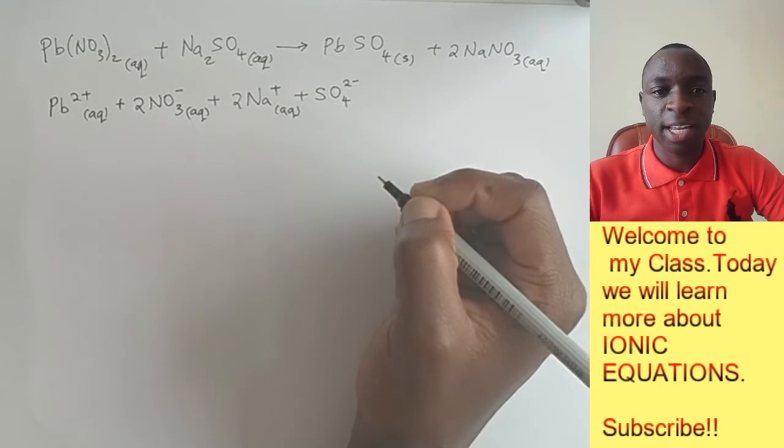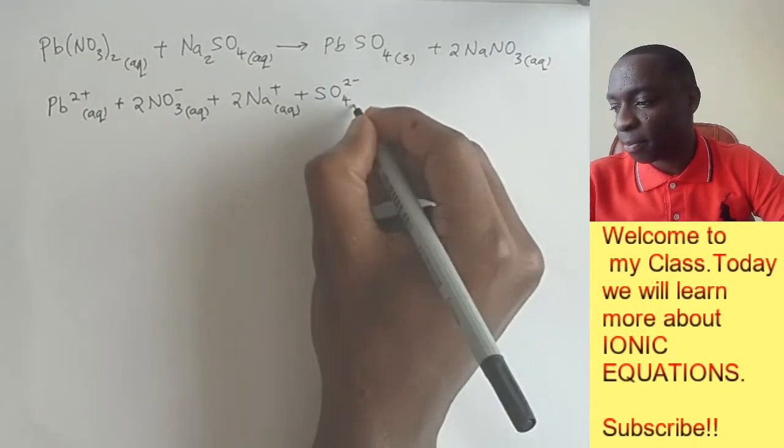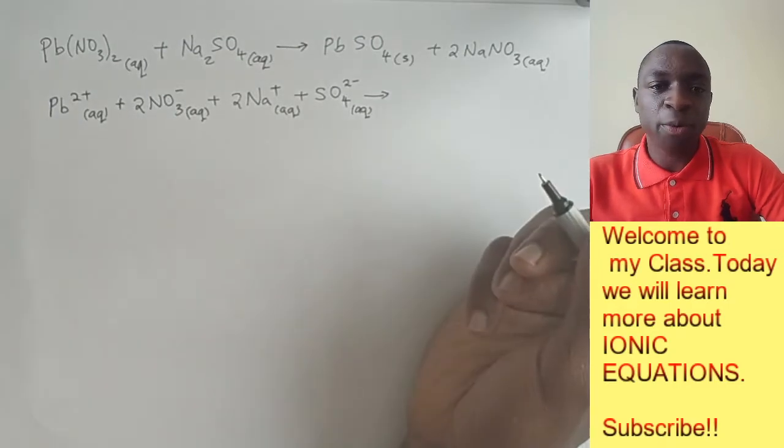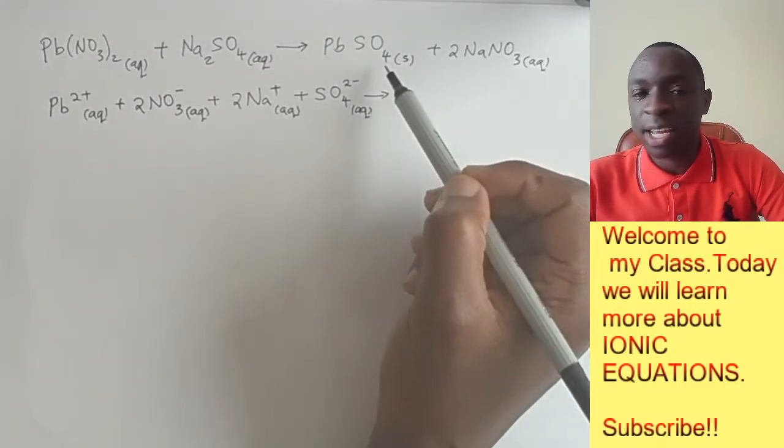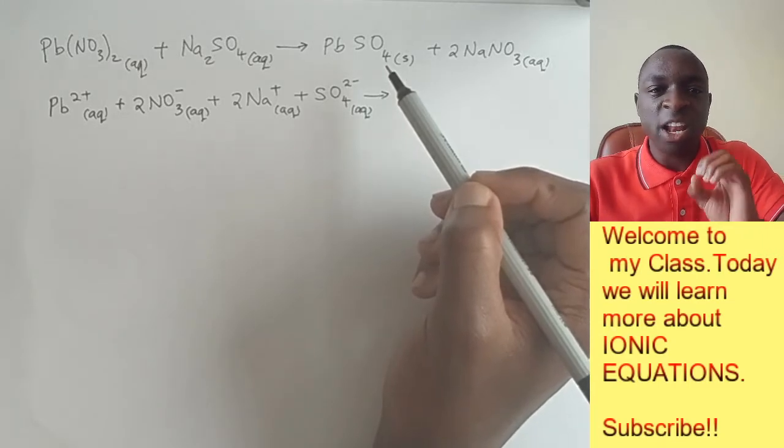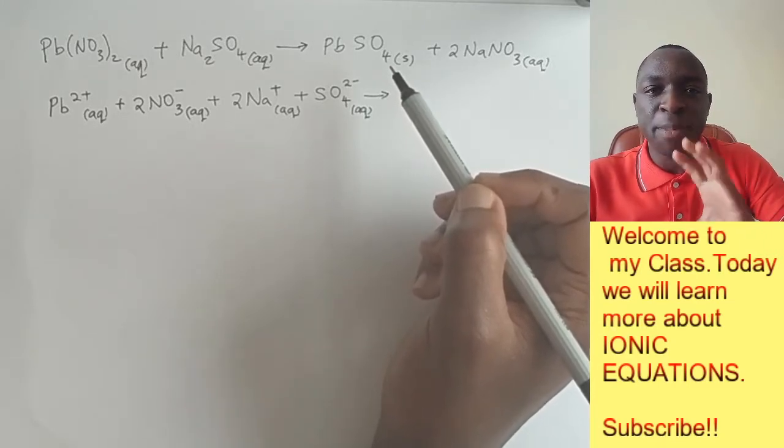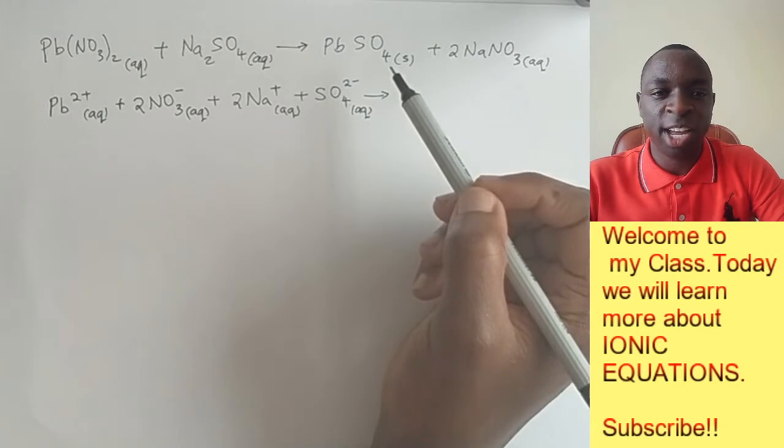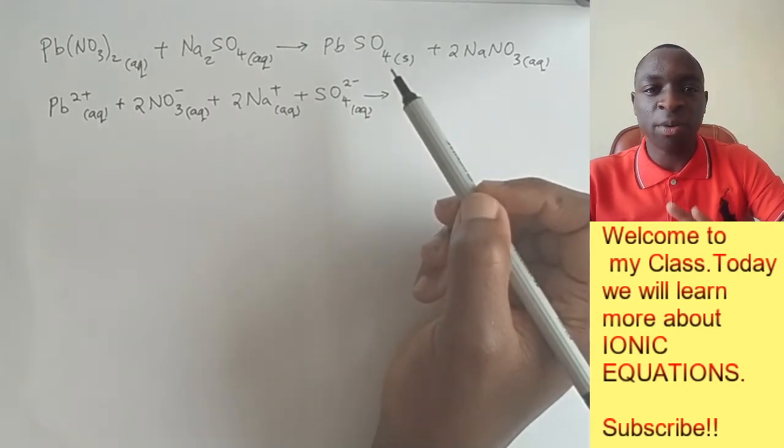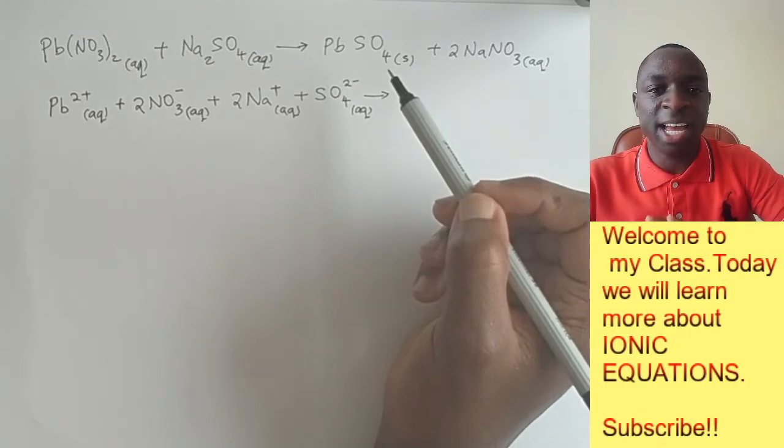So we are done with the reactant side. So let's head to the product side. Now on the product side, we have lead sulfate. This lead sulfate is in solid state. Anything that is not aqueous remains the same. Do not touch it. Do not interfere with it. So if it is solid, liquid or gas, maintain it as it is.